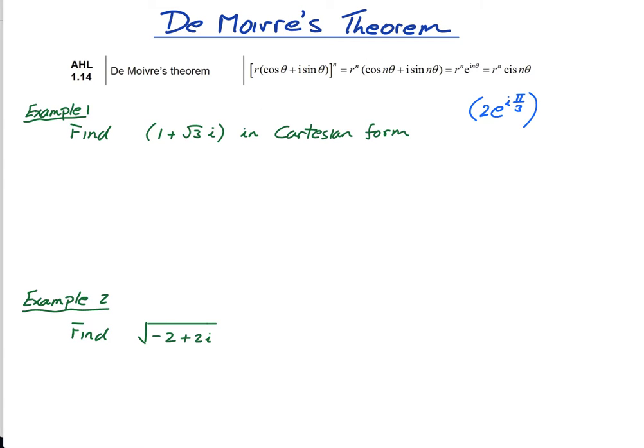Then we know that if I want to raise this to the power of 5, it's just 2 to the power of 5 times e to the i times 5 pi over 3, because of the rules of indices. So you can actually prove De Moivre's theorem pretty easily using Euler.